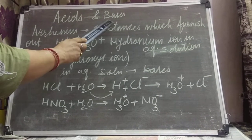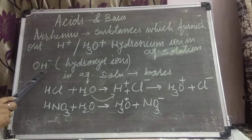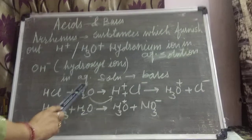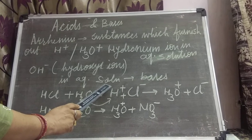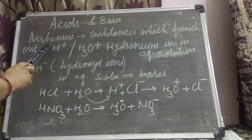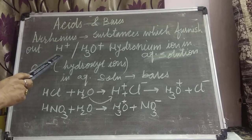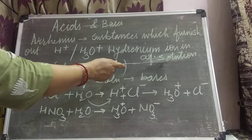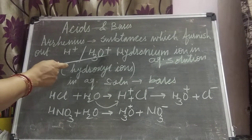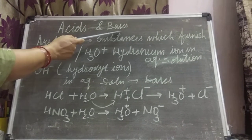Similarly, what will be a base? A substance which furnishes out OH⁻, which we call hydroxyl ions, in aqueous solution is termed as a base. That means for proving the Arrhenius concept, presence of water is required because substances are dissolved in water. When dissolved in water producing H⁺ or H₃O⁺, it is acid; and if it is producing OH⁻, then it will be base.